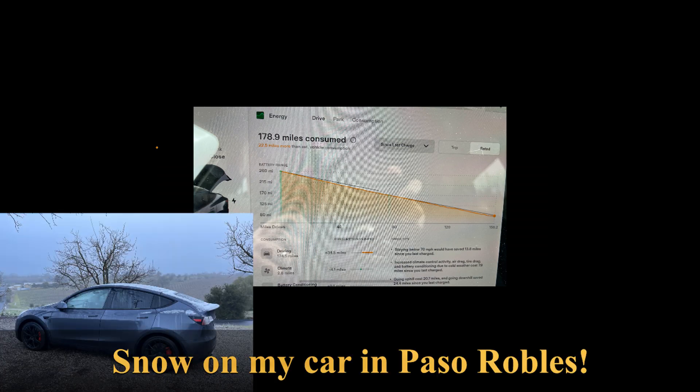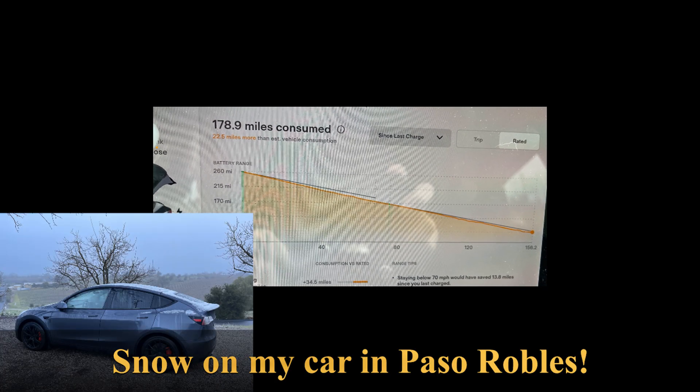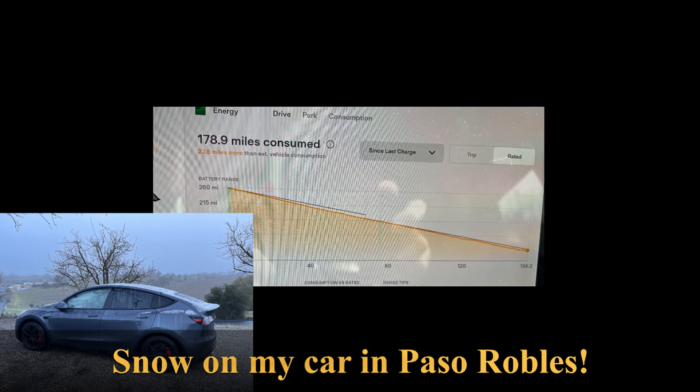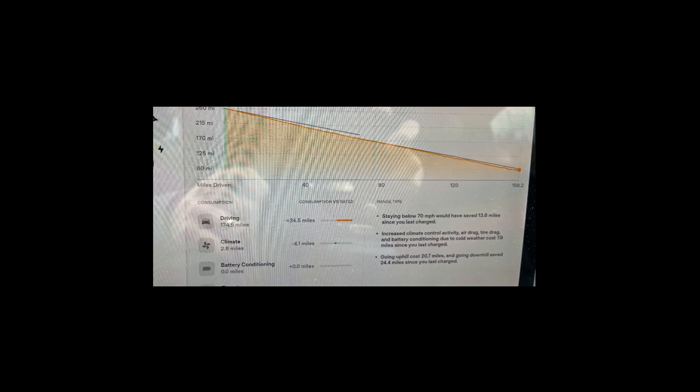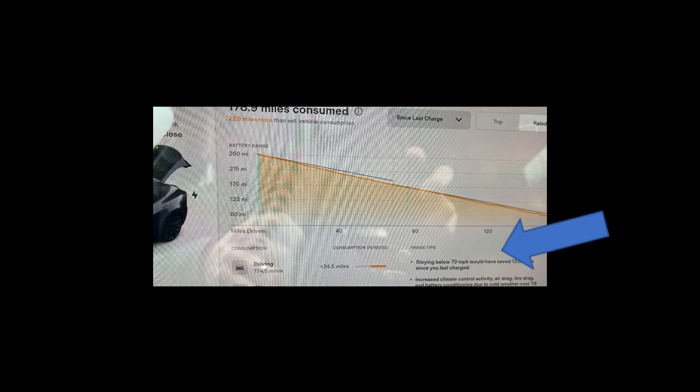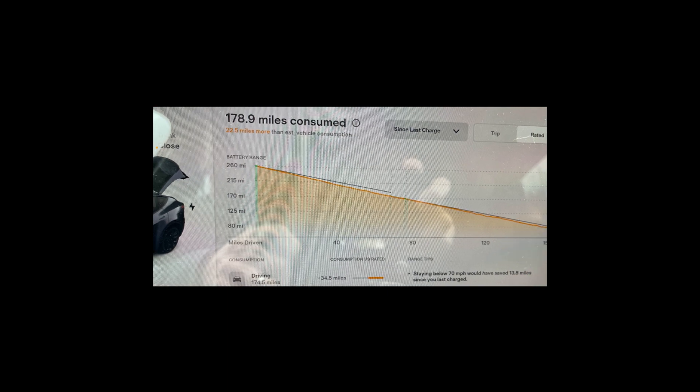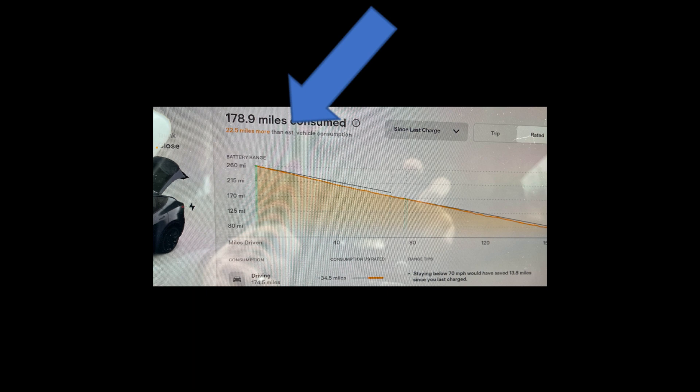On the return ride back home, I preconditioned the battery just as I had shown you. I set it, and what you can see here, again there was an advantage—I did get a benefit because I was going downhill, saved about four or five miles there. I actually drove faster; you can see I used more miles over 70 miles an hour, but it only had used 22 more miles than was estimated.